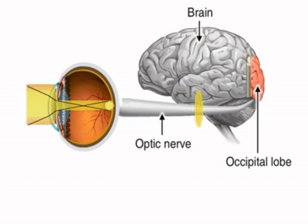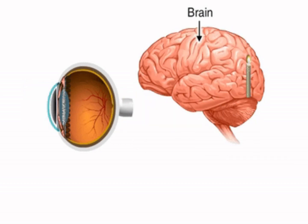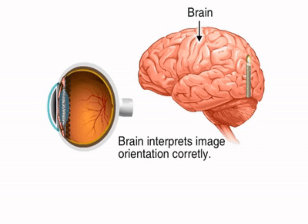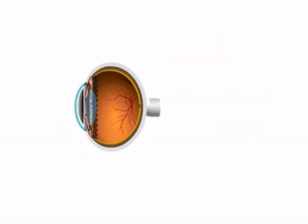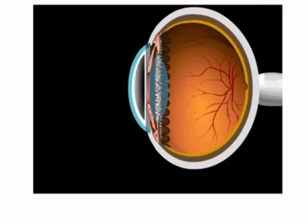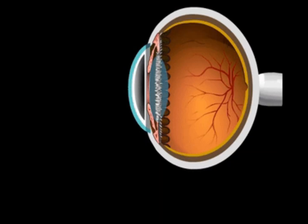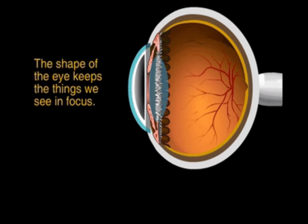After passing through the iris, the light rays pass through the eye's natural crystalline lens. This clear, flexible structure works like the lens in a camera, shortening and lengthening its width in order to focus light rays properly.